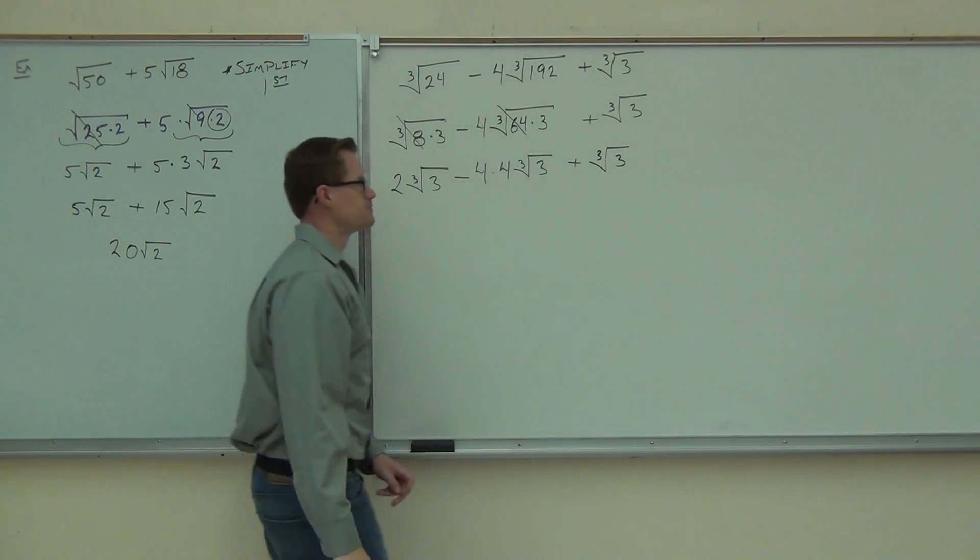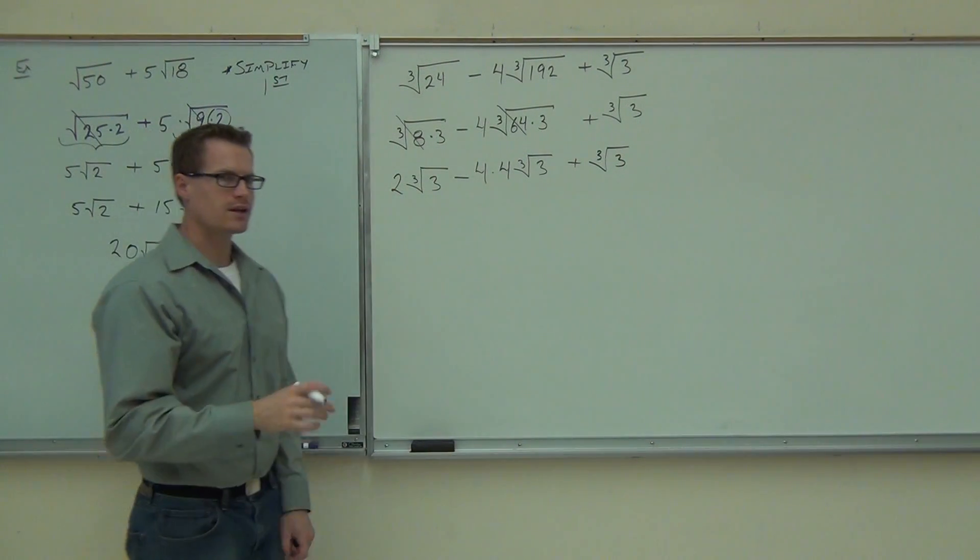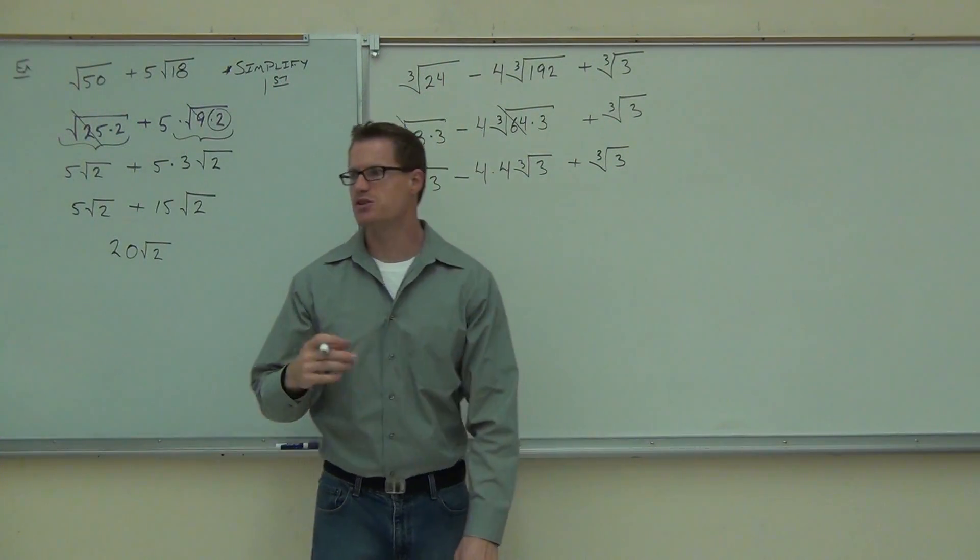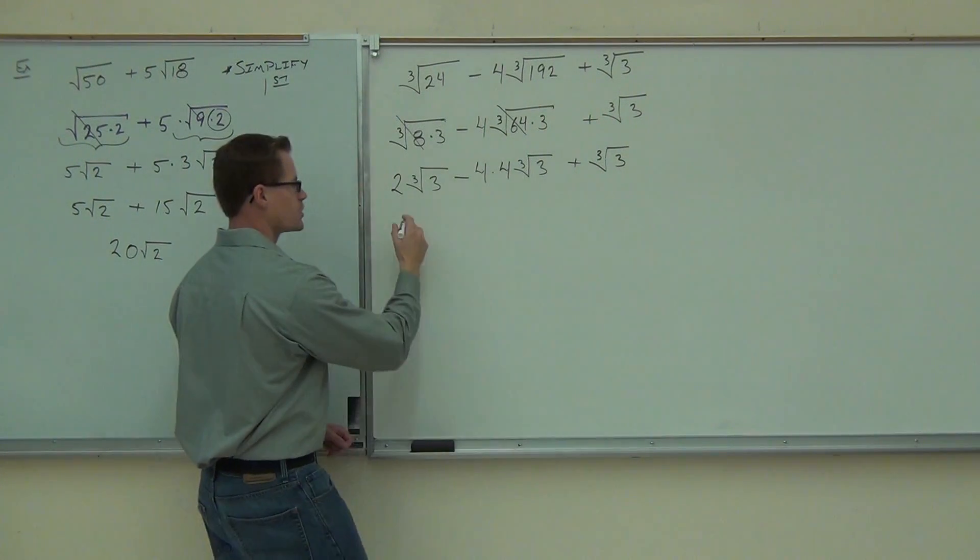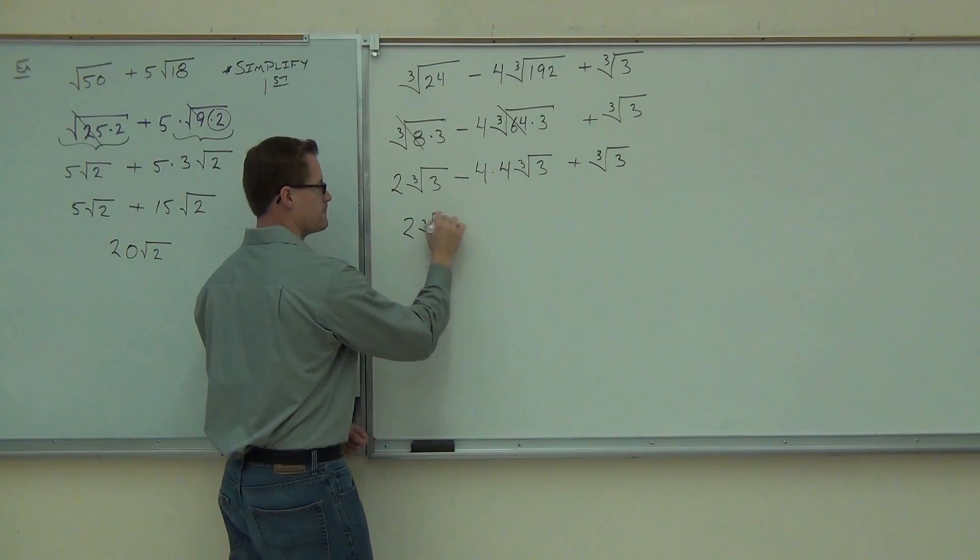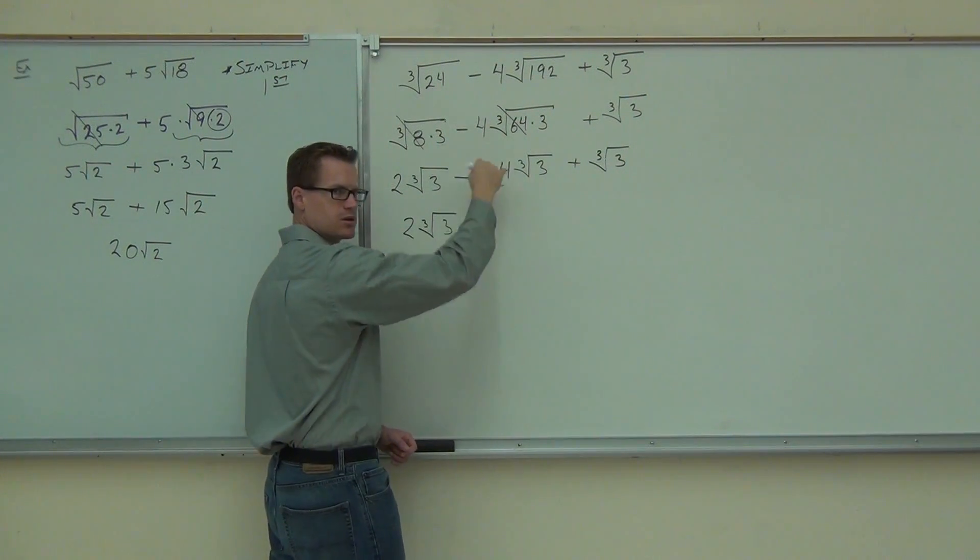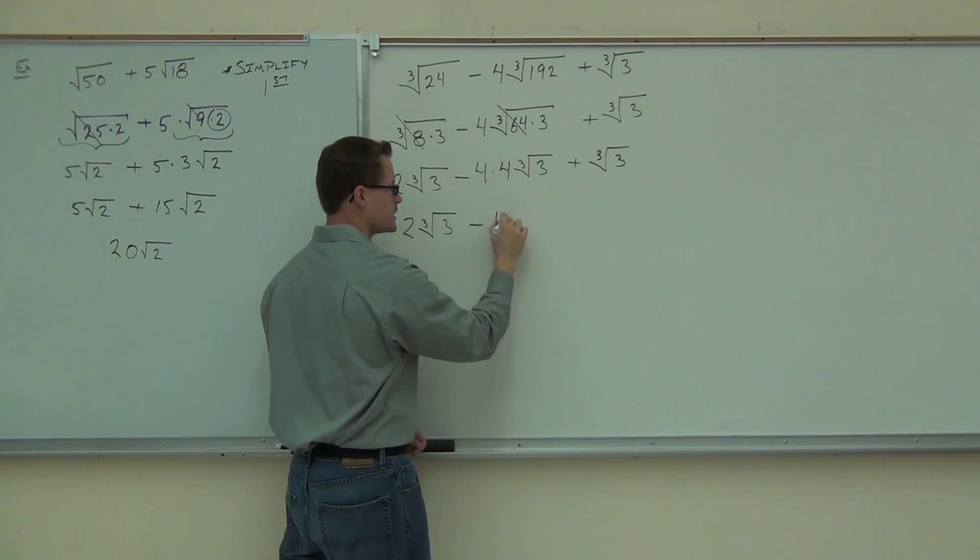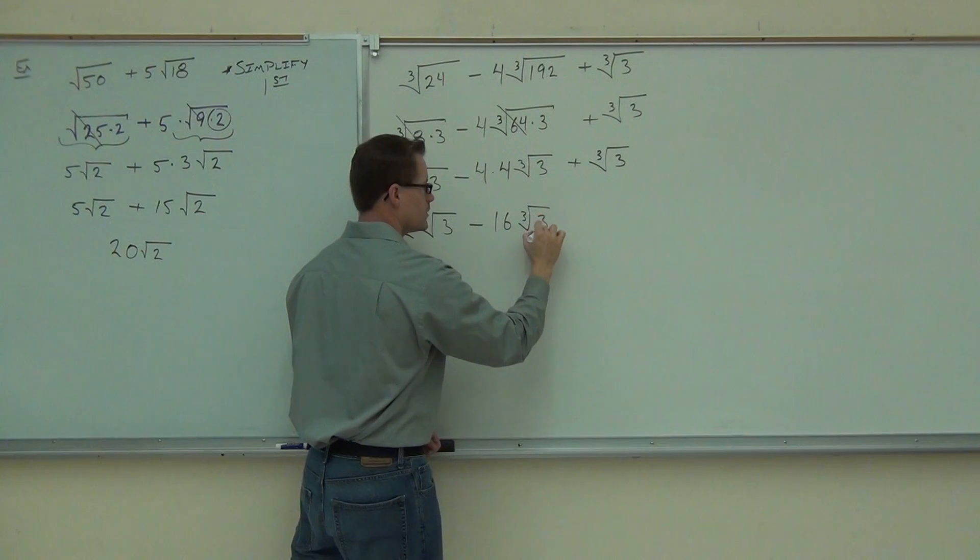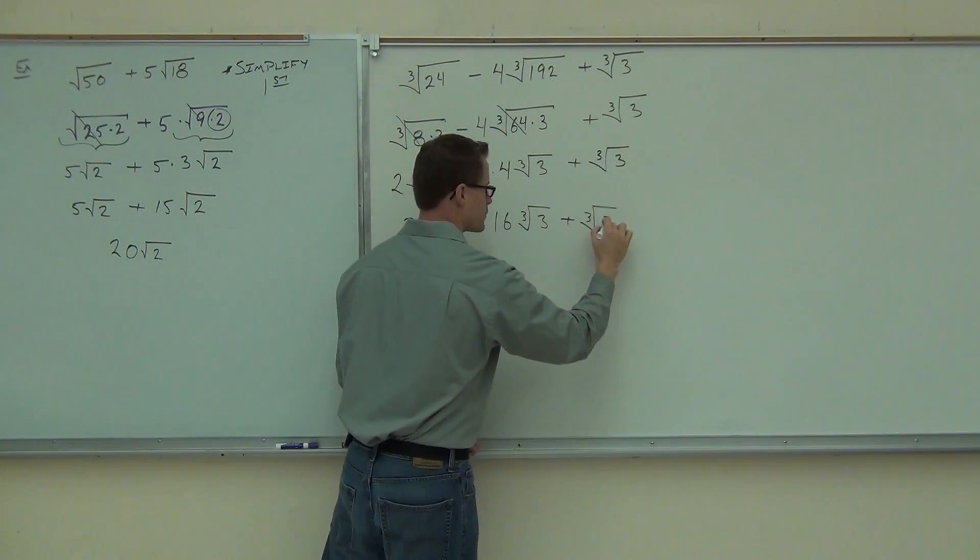So cube root of 64 is 4. And I have a cube root of 3 still inside of my radical. Plus I've got this cube root of 3. I heard the back end. We're going to clean this up just a little bit. Multiply anything that you can before you start combining your roots. So I know 2 cube root of 3. That's good to go. Minus, this gives you how much? 16. Good. 4 times 4 is 16.